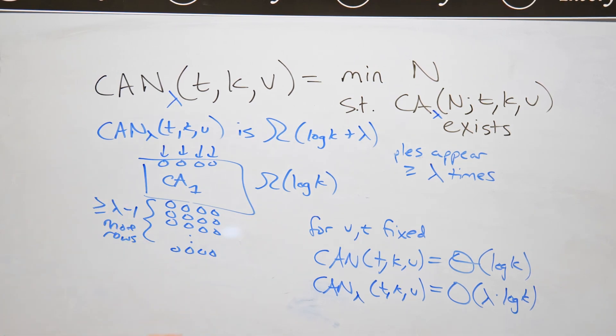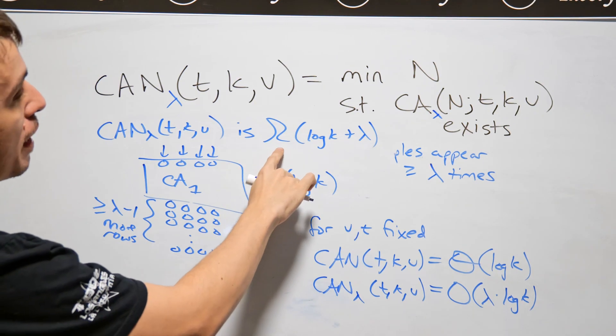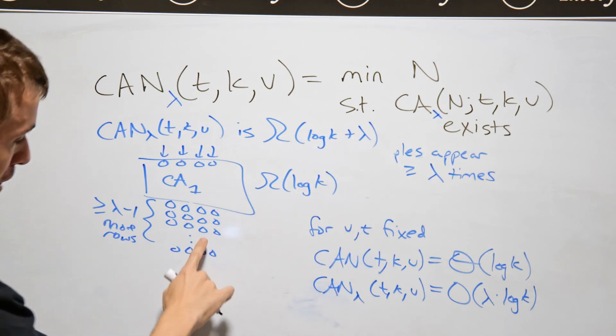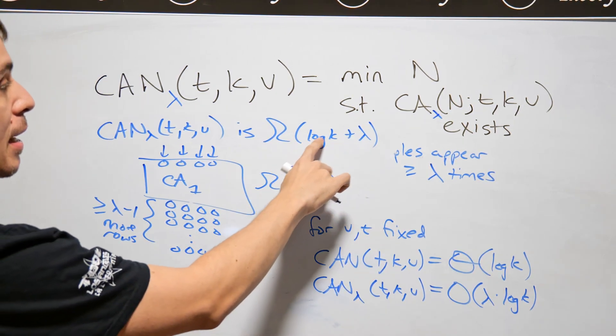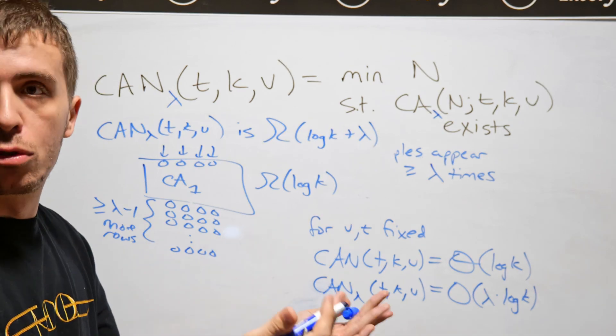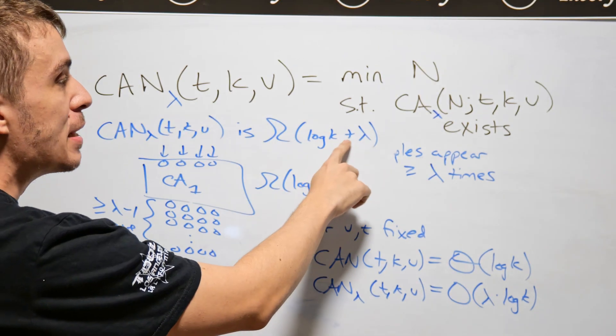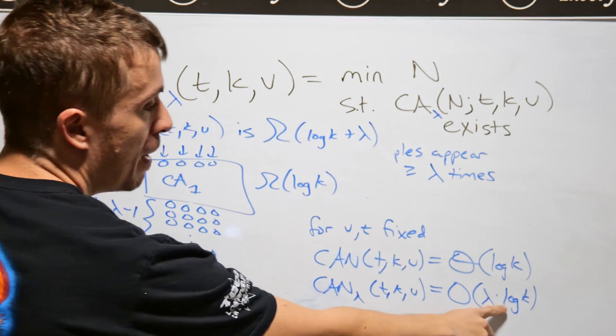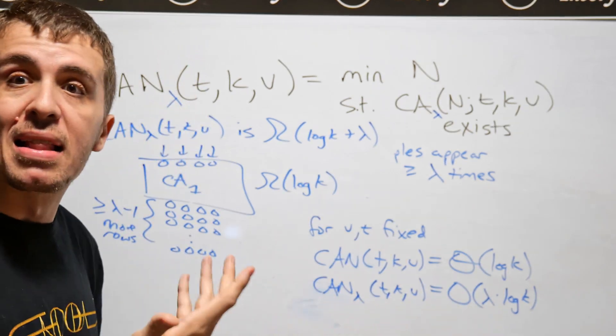Because I have to have a minimum of log k here, plus lambda minus one here, so then that will easily prove that we need at least linear in lambda to do this last part, and log k because that's the proof for normal covering arrays part. So therefore, we need at least this amount, and it suffices to have at most that amount.